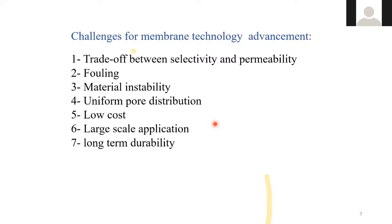The first big problem in membrane technology is the trade-off between selectivity and permeability — if we increase one, we decrease the other. The second problem is fouling. The third is material instability; for example, graphene oxide is not stable in aqueous solution, and other materials are not stable in organic solvents. Uniform pore distribution, low cost, large-scale application, and long-term durability are all current challenges.